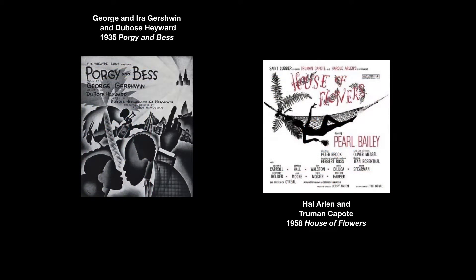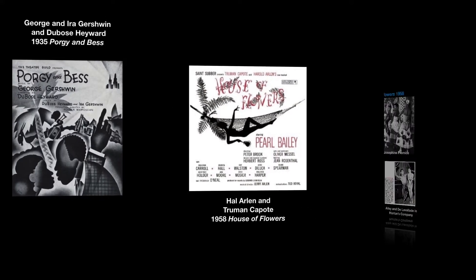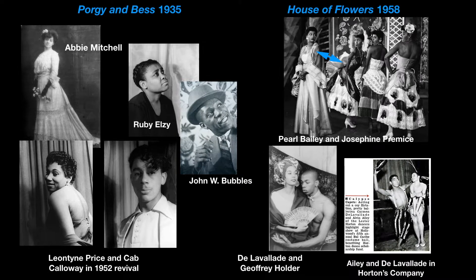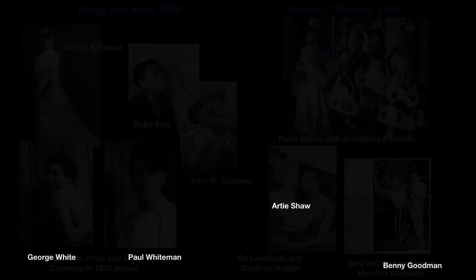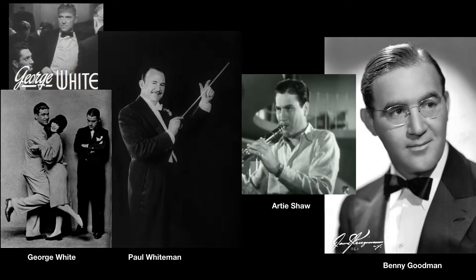The first examples are theatrical productions: House of Flowers, written by Truman Capote and Harold Arlen, both European-American; and Porgy and Bess, written by DuBose Heyward and the brothers George and Ira Gershwin. Both featured all-Black casts including Diana Carroll, Pearl Bailey, Geoffrey Holder, Carmen de Lavallade, Alvin Ailey, and Josephine Premice, just to name a few. In music, I named Benny Goodman, Artie Shaw, Paul Whiteman, and in dance, director George White—who famously and incorrectly claimed to have invented the Charleston, a claim Langston Hughes had to publicly correct.